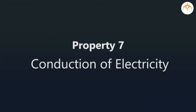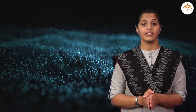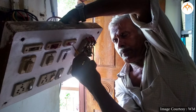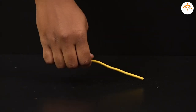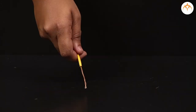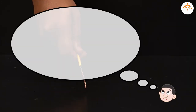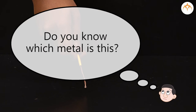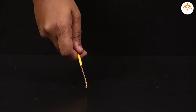Conduction of electricity: students, have you seen an electrician working at your home changing a damaged switchboard or a switch? There are many wires with different colours under a switchboard. Let us take this piece of wire and see what is inside this covering. Do you know which metal this is? We use copper to make electrical wires.